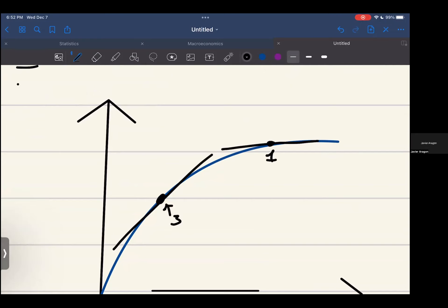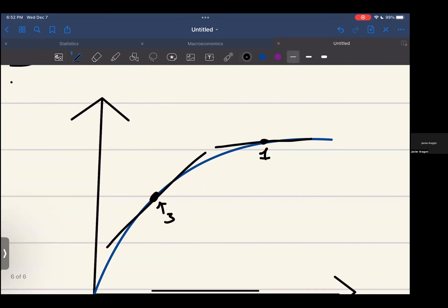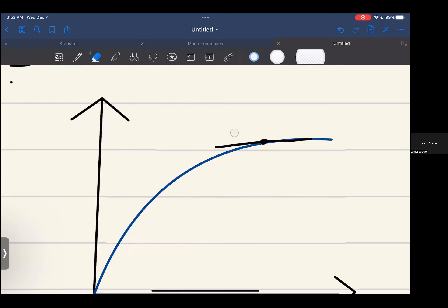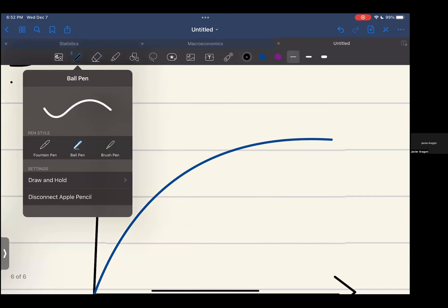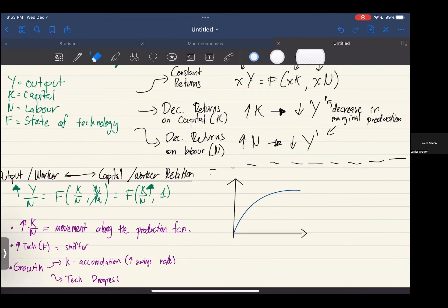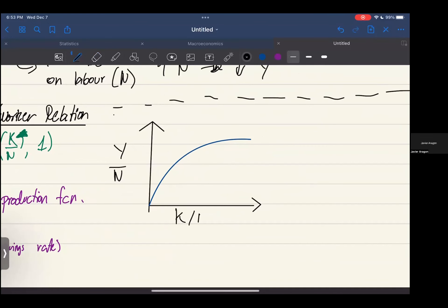So here for every worker you increase it's going to give you three units of output, but here for every worker you increase it's only going to give you one unit of output because the marginal return to scale is decreasing. By the way, this is not in the book so don't quote me on this, don't try to memorize that, it's just an easier way for me to understand it. If you guys find it easier to understand it that way, go ahead. If not, just ignore this, it is not part of the course.